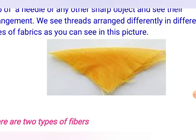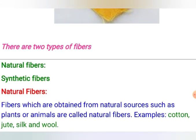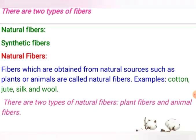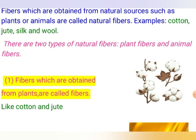On the basis of the sources from which fibers are obtained, they are of two types: natural fibers and synthetic fibers. Natural fibers are those which are obtained from natural sources like plants and animals. Natural fibers are of two types: plant fibers and animal fibers. Cotton, jute, silk, and wool are examples of natural fibers. Fibers obtained from plants are called plant fibers.